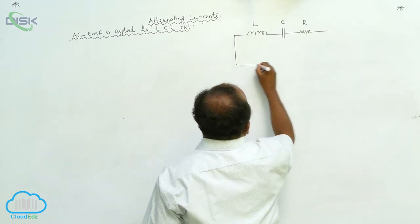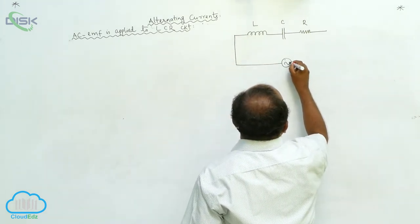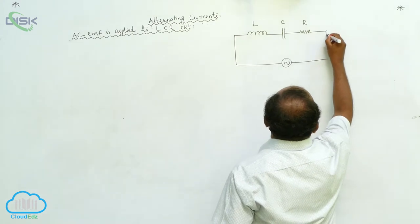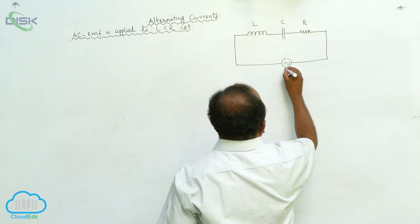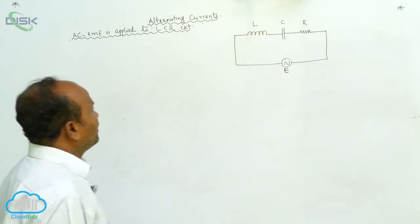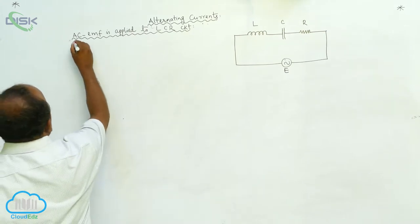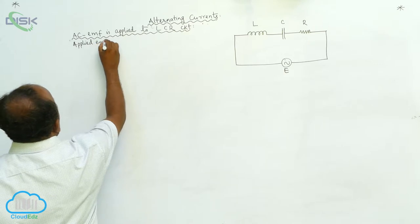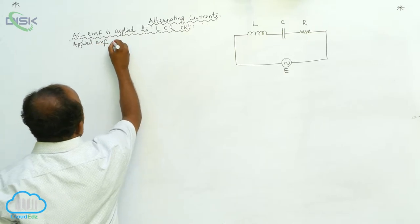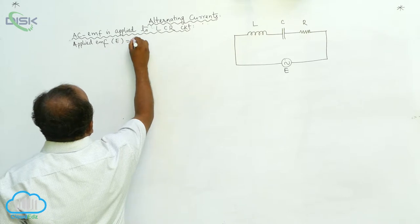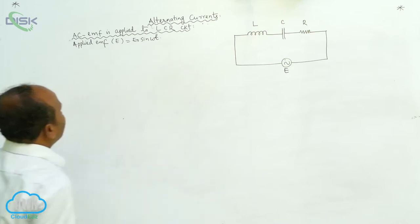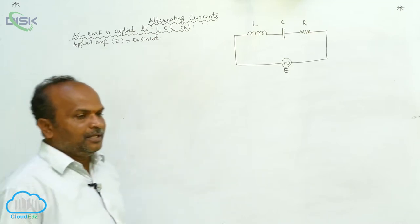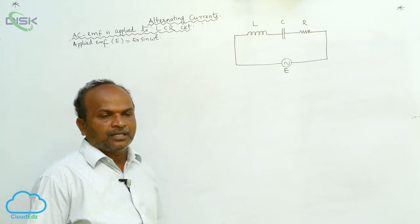Both L, C, and R are applied AC EMF. EMF is represented by E. The applied EMF is equal to E₀ sin(ωt).